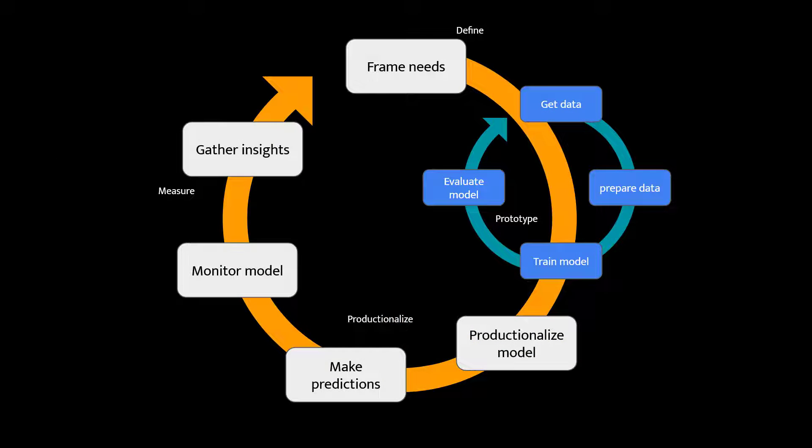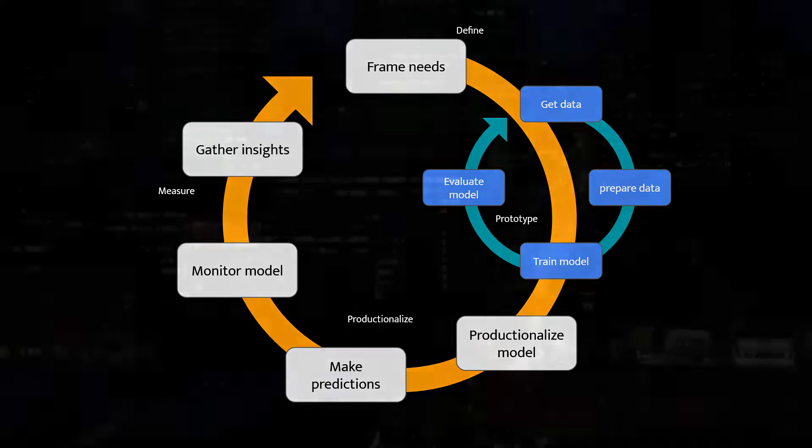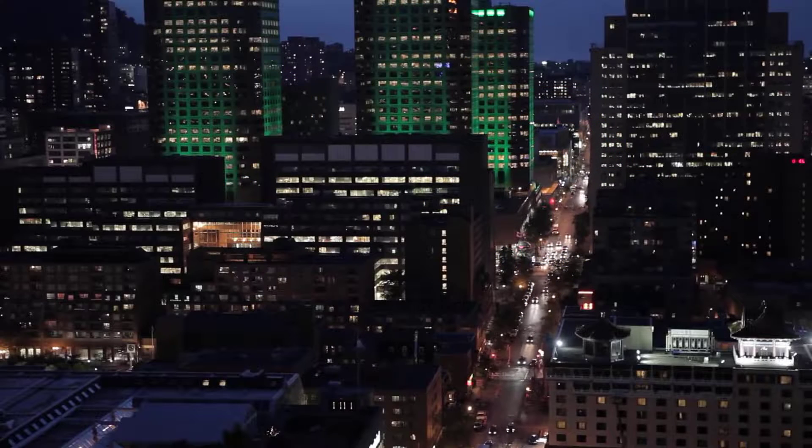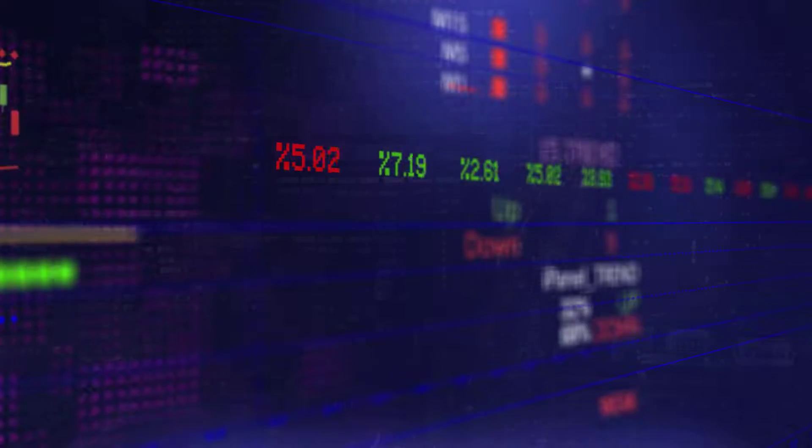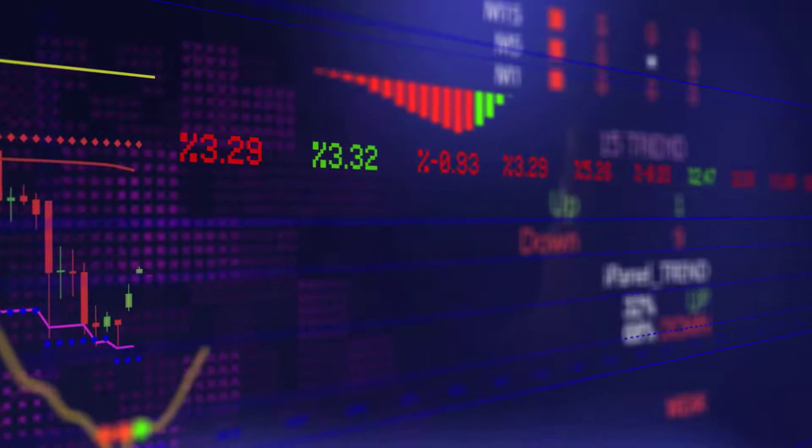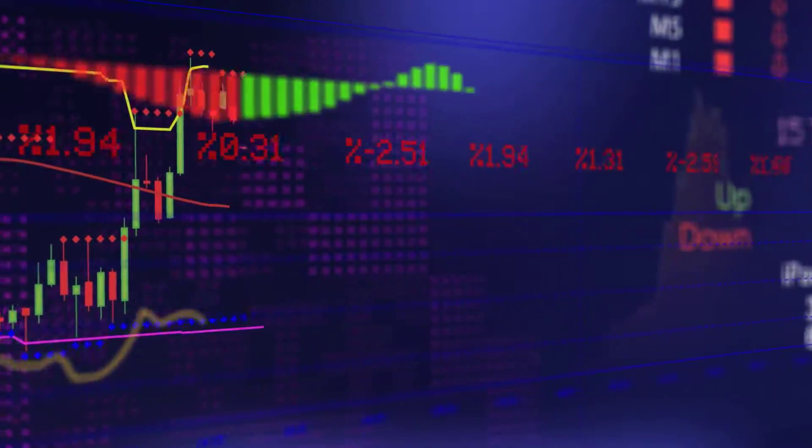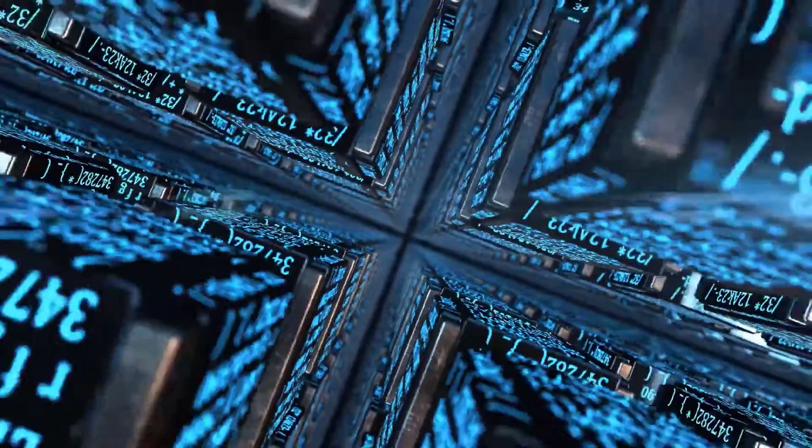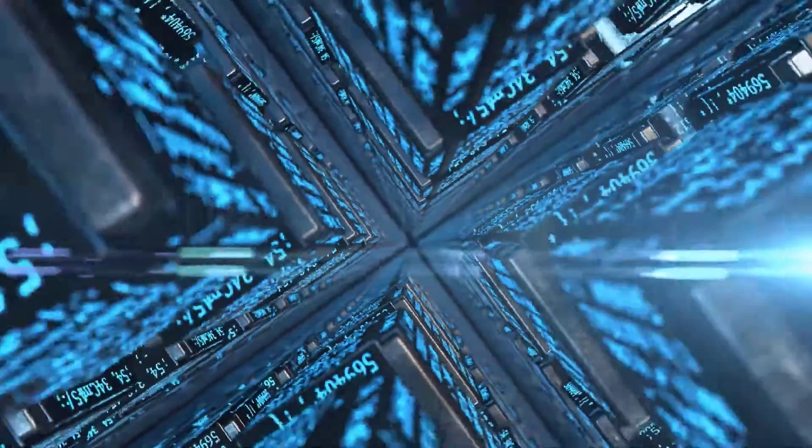Adaptive learning is a process where the model is updated continuously as new data becomes available. This is in contrast to traditional machine learning where the model is trained once on a fixed dataset. Adaptive learning is important because the real world is constantly changing. Data may become outdated or new data may become available that can improve the model's performance. By adapting to new data, adaptive learning models can stay up to date and provide more accurate results.